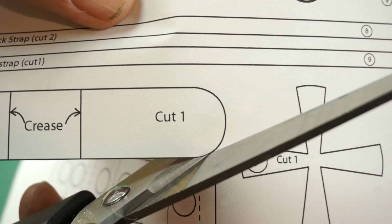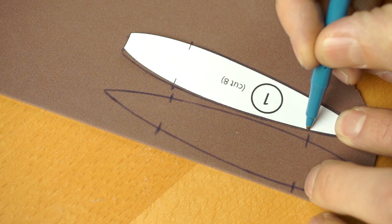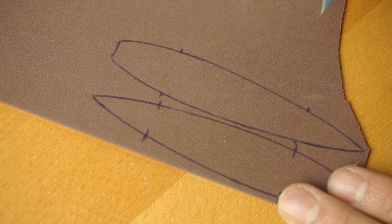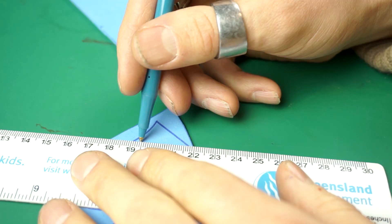All right, print out the pattern and cut out the pieces. Carefully trace the pattern pieces onto your foam, making sure to mark all the alignment points. Mark the creases on piece 5, the lines on piece 6, and the lines on the fins.